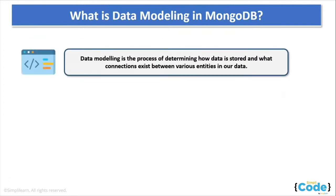What is data modeling in MongoDB? Data modeling is a process of taking unstructured data generated from real-world scenarios and introducing it to the data server, then structuring it into a logical data model in our database. It is basically a process of determining how data is stored and what connections exist between various entities in a relationship. You don't have to create a schema before inserting data because NoSQL is flexible — MongoDB supports a dynamic database schema, making it unnecessary to create your schema in advance.